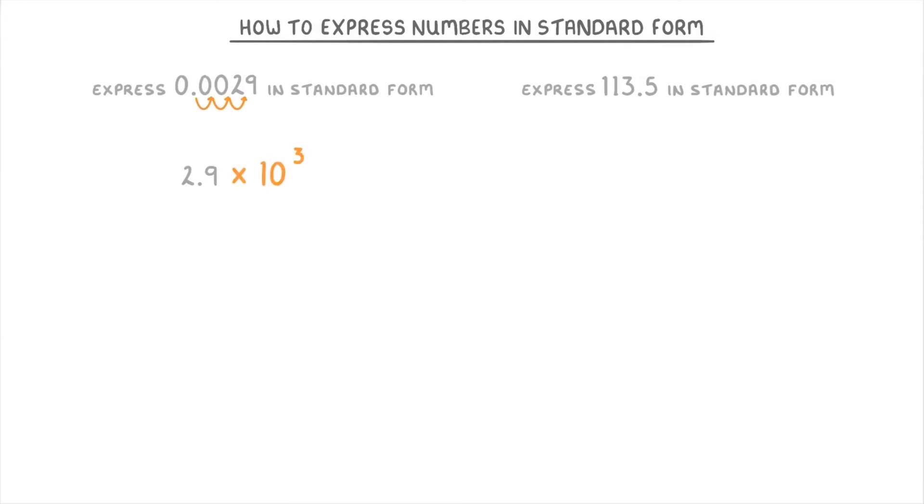So we can add times 10 to the power of three. Because 0.0029 is smaller than 2.9 though, we know that it would need to be a negative three. So our answer is 2.9 times 10 to the power of negative three.